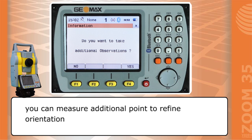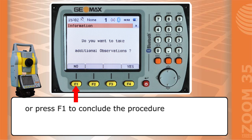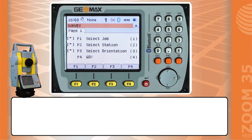You can measure additional point to refine orientation. Press F1 to conclude the procedure. Press F4 to continue survey.